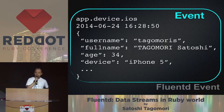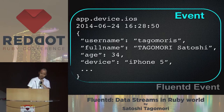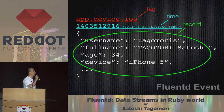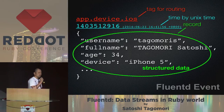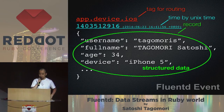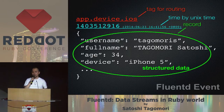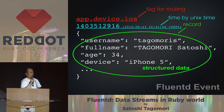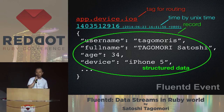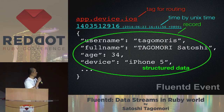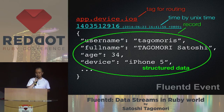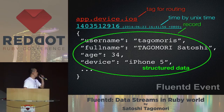The Fluentd event is very simple and is built on three elements: tag, time, and record. The tag is used for routing and is a dot-separated string. Time is a Unix time 64-bit integer, formatted for local times and local formats. Record is a JSON object — also a hash object with string keys in the Ruby world — and record does not need any schema, so we can put any data into it.